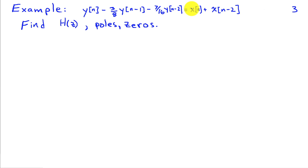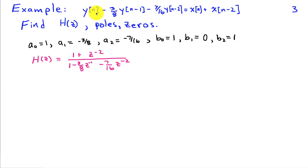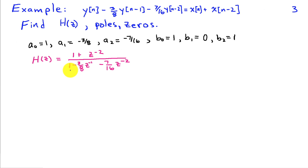As an example, consider the second-order difference equation: y(n) − (3/8)y(n−1) − (7/16)y(n−2) = x(n) + x(n−2). We identify the coefficients: a_0 = 1, a_1 = −3/8, a_2 = −7/16, b_0 = 1, b_1 = 0, b_2 = 1. The system function is then H(z) = (1 + z^{−2}) / (1 − (3/8)z^{−1} − (7/16)z^{−2}).